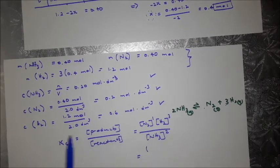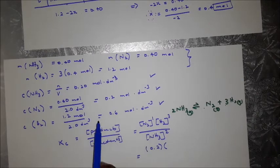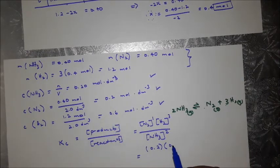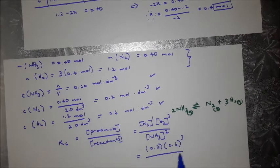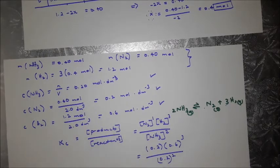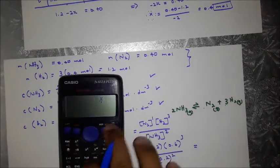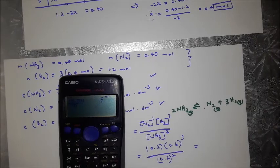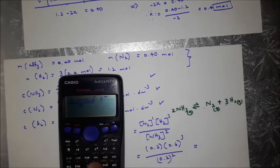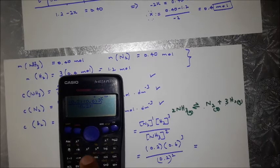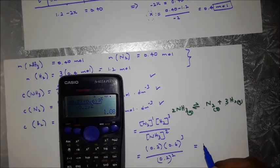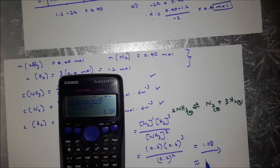Substituting: Kc = (0.2)¹ × (0.6)³ ÷ (0.2)². Calculating: 0.2 × 0.216 ÷ 0.04 = 1.08. So Kc = 1.08, which can also be written as 1.1. Note that Kc has no units.